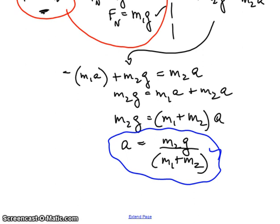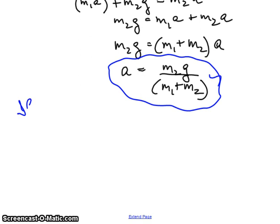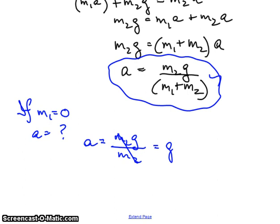Let's look to see if it makes sense to us. If m1 equals 0, what is a? Well, if m1 equals 0, then a equals m2g over m2, or a equals g. So that makes intuitive sense to us because essentially you cut the string and the thing just falls. That's our equation. The other thing you look at is if m1 is very, very large, the acceleration is going to be very, very small. And that makes intuitive sense too. It's much more difficult to move a heavy object with a lot of mass and inertia. We'll look at a numerical example in the next video.